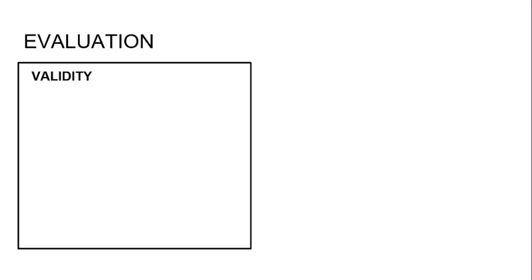When we think about validity in measuring stress with self-report scales, social desirability bias is a really big issue — I've put weaknesses in red and strengths in green to make it really clear. This is a real problem in this area: when people are asked about stress and their ability to cope, they're going to downplay how stressed they felt because people don't like to appear like they can't cope. They want to present themselves in a good light. So that affects validity — it's not measuring what it's supposed to, and you're not getting an accurate score.